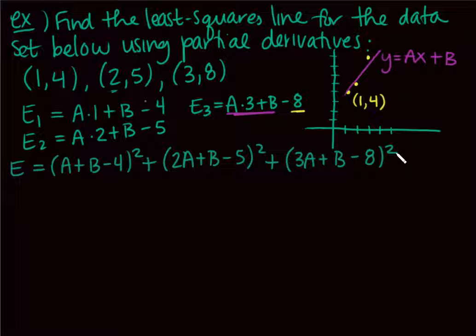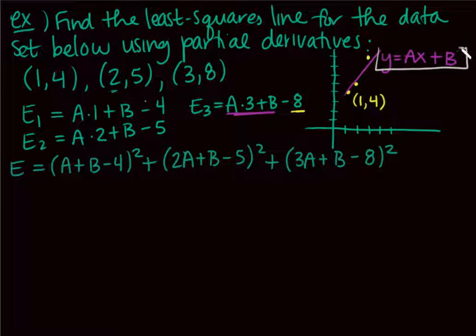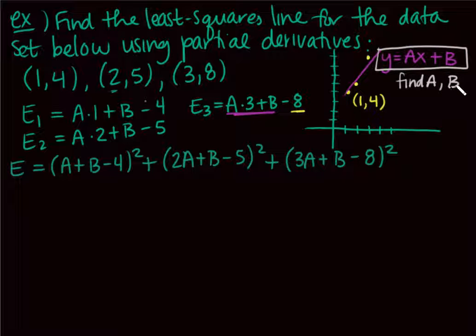Our least squares error is E = (a + b − 4)² + (2a + b − 5)² + (3a + b − 8)². Our whole goal is to find the slope a and y-intercept b of the best fit line, so we need to minimize E.